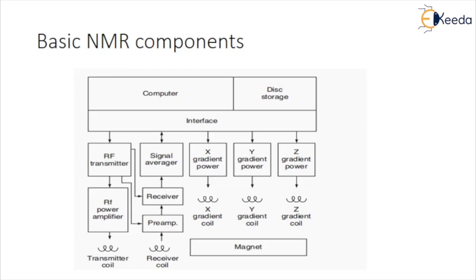RF transmitter system: in order to activate the nuclei so that they emit a useful signal, energy must be transmitted into the sample — this is what the transmitter does. The system consists of an RF transmitter, RF power amplifier, and RF transmitting coils. The RF transmitter consists of an RF crystal oscillator at the Larmor frequency.